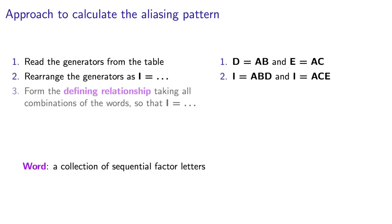The last piece of terminology we need is what is known as the defining relationship. The defining relationship is a sequence of words that are equal to each other. The defining relationship always has a length of 2 to the power of p words. And the first word in the relationship is always the identity, I.